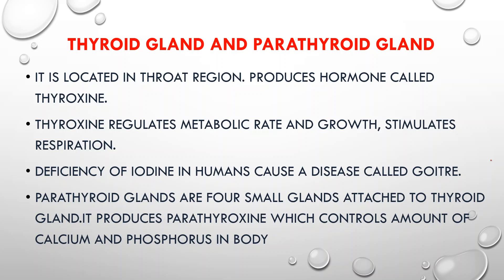If the thyroid gland produces too little thyroxine, body weight increases. But if the thyroid gland produces too much thyroxine, the rate of respiration increases and the person loses weight. When the respiration rate is very high, the body will automatically lose weight.